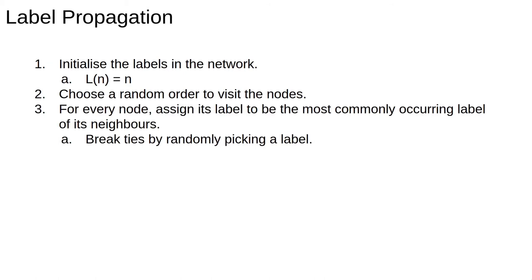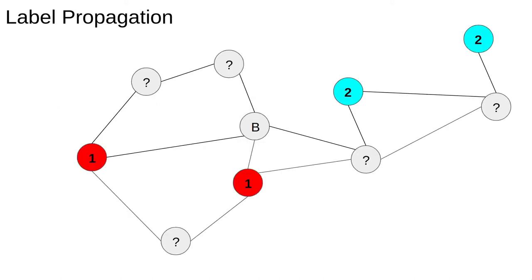Then, for every node we visit, we collect the labels of its neighbours and assign the label of the target node to be the same as the most common label in the neighbour set. Often, there are multiple labels with the same count, in which case we just pick one of the most common labels at random.